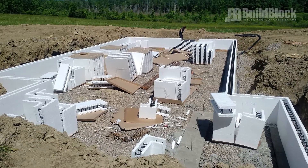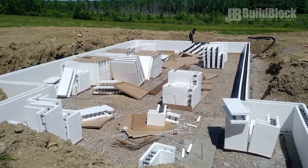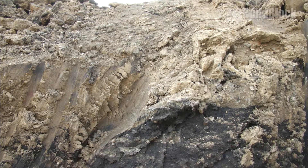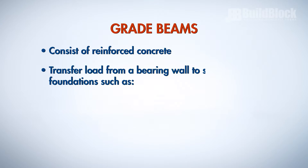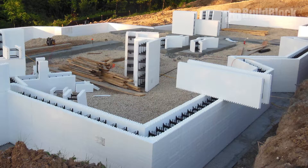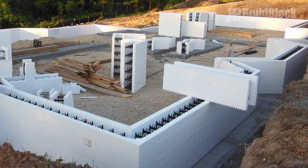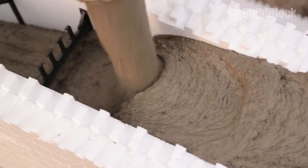Grade beams can be used on top of pilings and piers when the surface soil's load-bearing capacity is less than the anticipated design load. These beams consist of reinforced concrete and transfer the load from a bearing wall into spaced foundations such as pile caps, caissons, or concrete piers. Poured grade beams can also be used without pier pilings or caissons when the soil load-bearing capacity is greater than the anticipated design load.